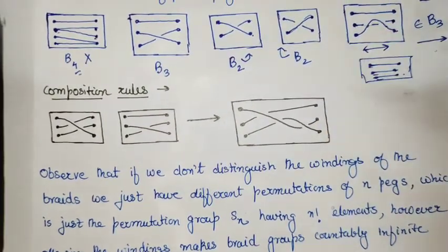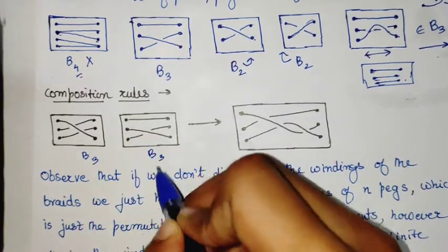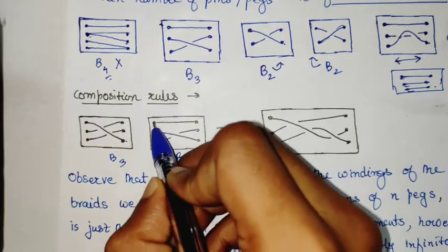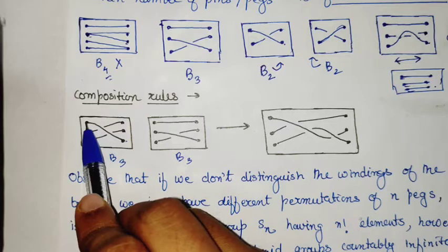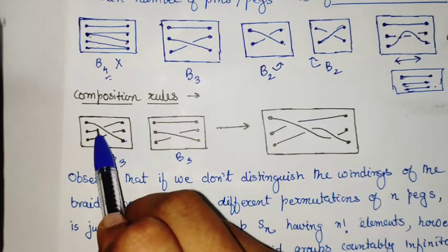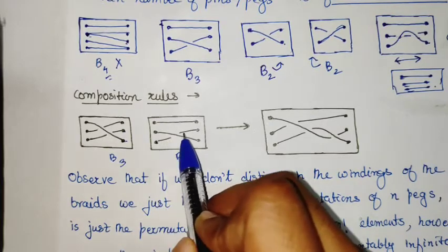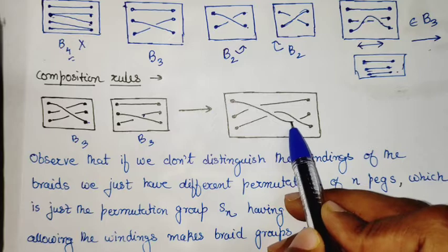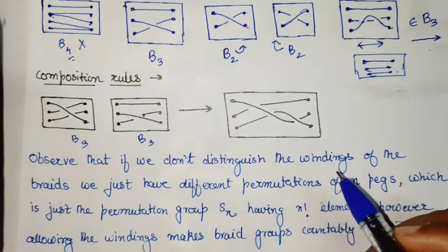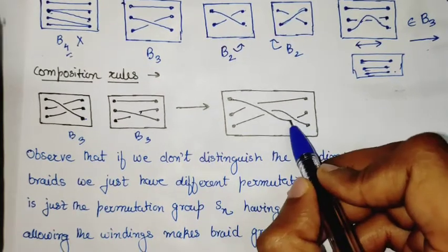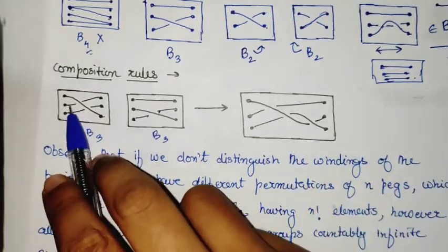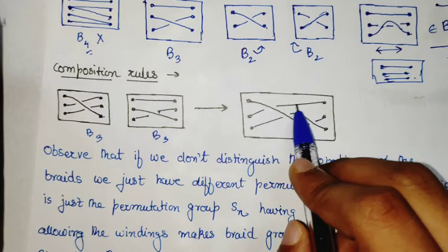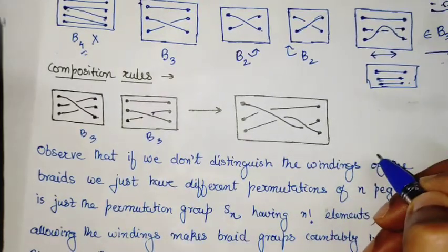The composition rules are simple: to compose two B_3 elements, attach the bottom pegs of the first braid to the top pegs of the second, then forget the intermediate connection points. So the first strand from one braid continues into the second: if the first maps to the third but the third then maps to the second below one strand, we track whether it passes above or below — represented by a gap in the drawing — and follow the complete path through.